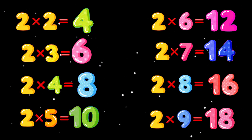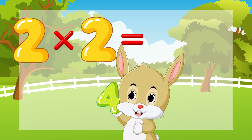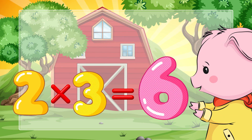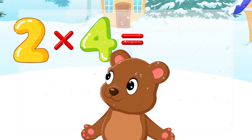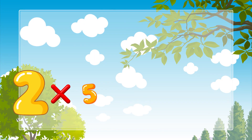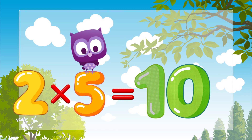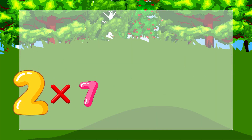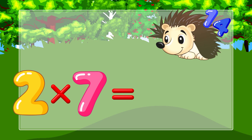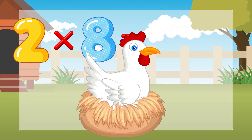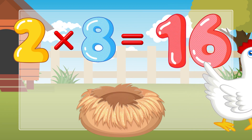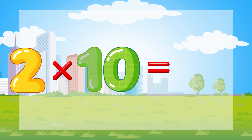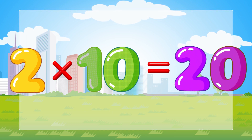Let's sing again. Two times two is four, two times three is six, two times four is eight, two times five is ten, two times six is twelve, two times seven is fourteen, two times eight is sixteen, two times nine is eighteen, two times ten is twenty. Well done!